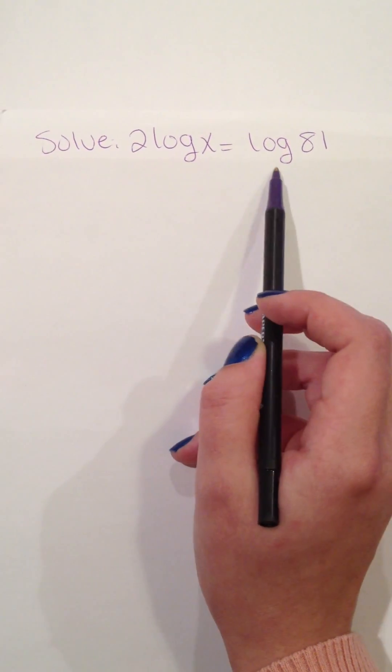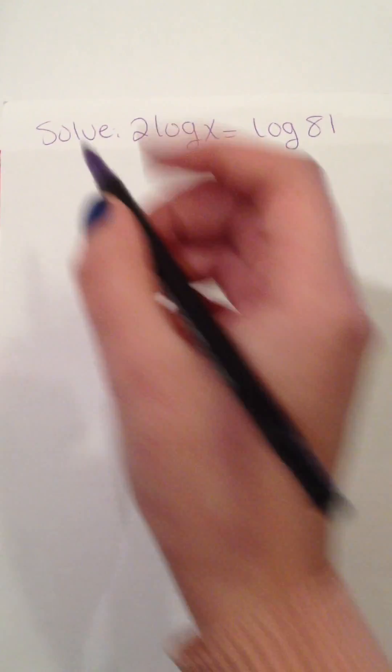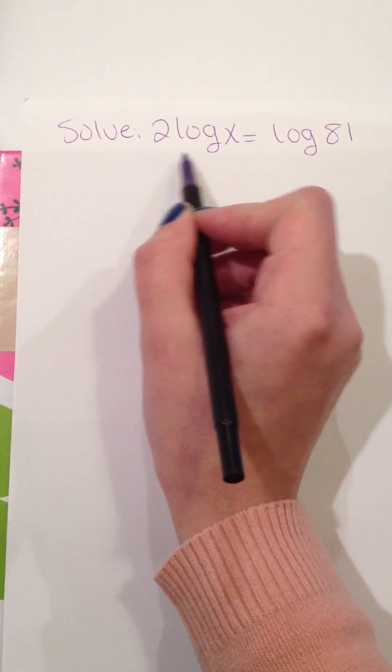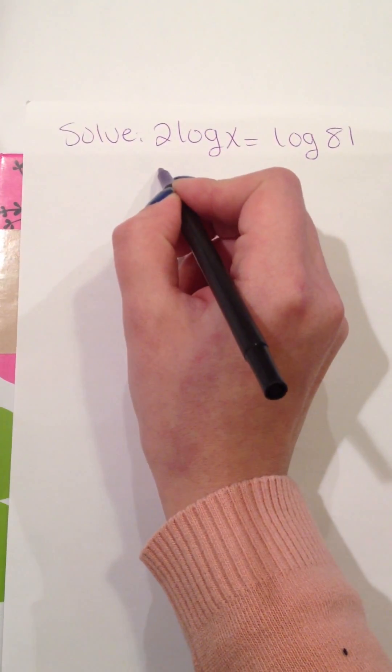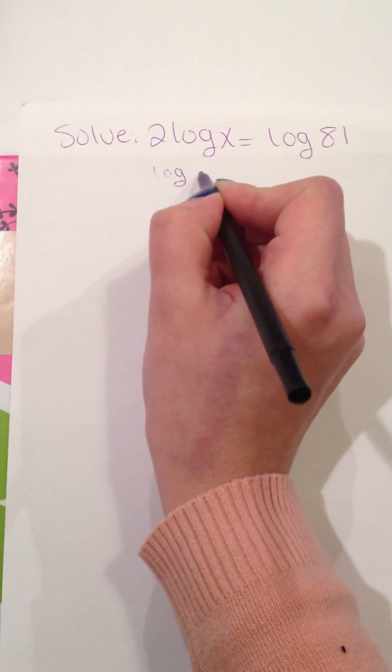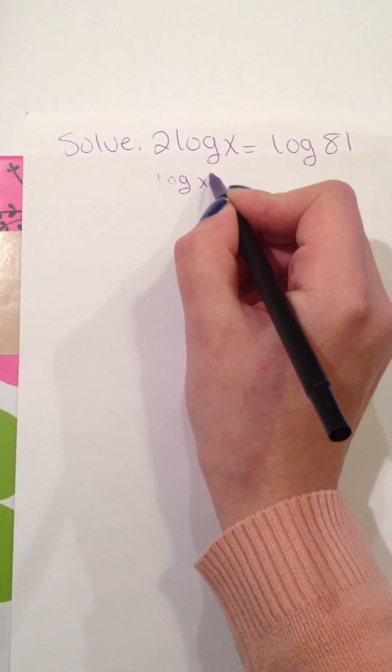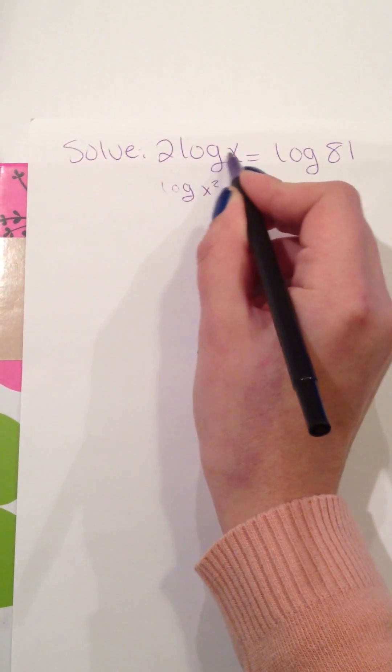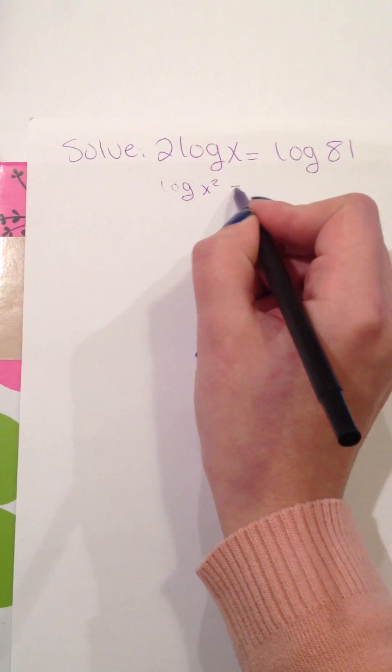Solve 2log(x) = log(81). We got 2log(x), and by the power rule, it's going to be log(x²) because this 2 is going to go up on top of here.